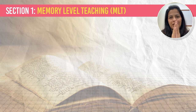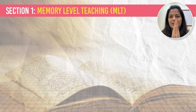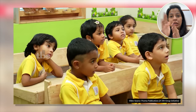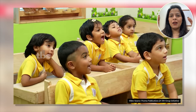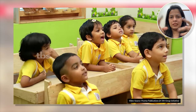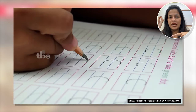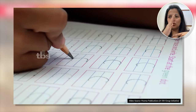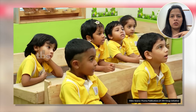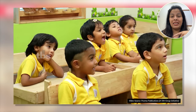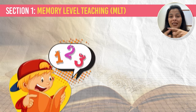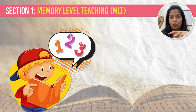Let's start with the first level: memory level. As I said, memory level is how you were taught during kindergarten, where you were asked to memorize things like English alphabets. Your teacher would tell you A, then B, then C, and you would memorize the sequence of English alphabets, Hindi alphabets, and numbers 1, 2, 3, 4.